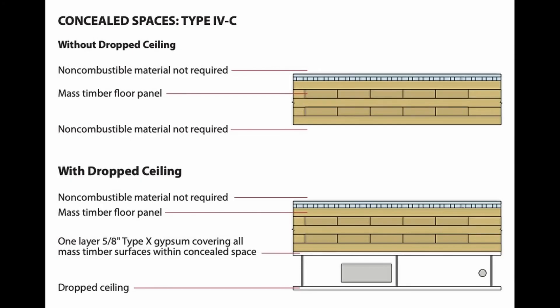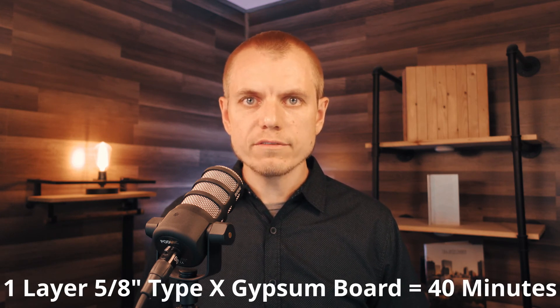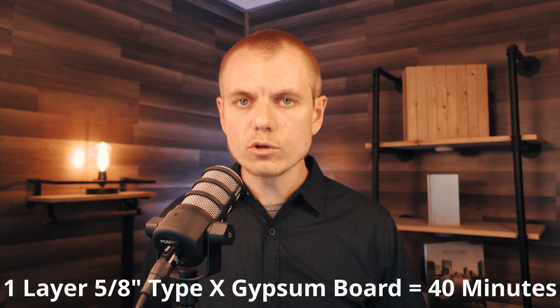Type 4C is very similar to Type 4HT with one key exception: we don't have the option to leave mass timber exposed within the concealed space. Unlike 4HT — where you could leave the timber exposed but sprinkler the area or fill with non-combustible insulation — in a 4C building we must always cover the mass timber within the concealed space. The code requires a non-combustible material providing a minimum 40 minutes of fire resistance; a single layer of 5/8" Type X gypsum wallboard accomplishes this.